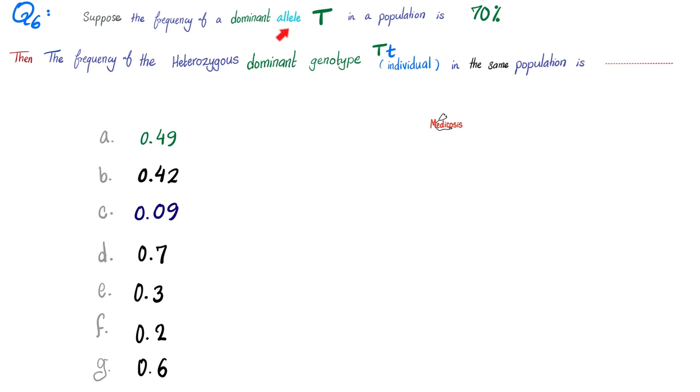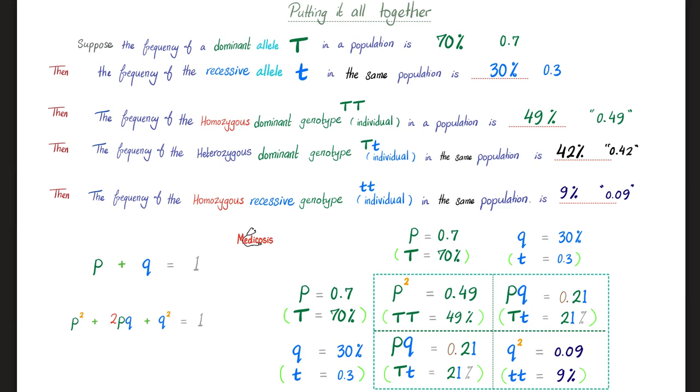Question number six. Suppose that the frequency of a dominant allele, T uppercase, in a population is about 70%, or 0.7. Then the frequency of heterozygous dominant genotype, big T, small t, in the same population is, please pause, and the answer is B, 42%. How did you arrive at that number? Easy. If the frequency of the dominant allele is 70%, or 0.7, therefore that's your P. Your P equals 0.7. Which means your Q has to equal 0.3, which is 1 minus 0.7 equals 0.3.